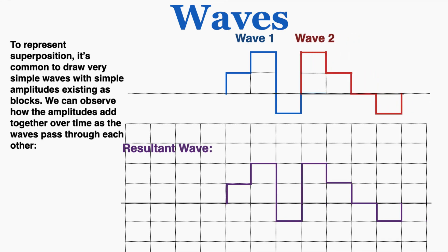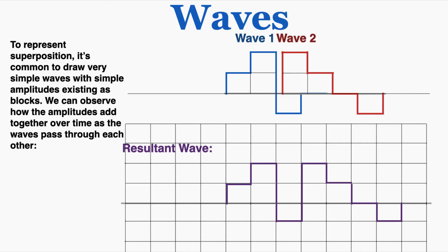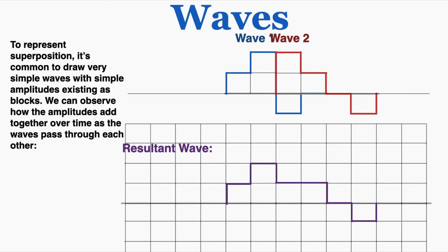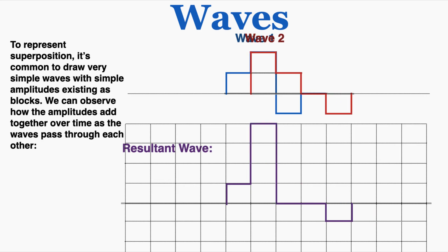As I bring wave 2 closer, I can see that at the point where the amplitude of wave 2 is 2, wave 1 has an amplitude of negative 1, so that's canceling out to produce an amplitude of 1. The resultant wave shows that in that one specific position the amplitude is 1 instead of 2 or negative 1. As the wave continues to move through, the positions with amplitude 2 are adding together so the total amplitude is 4. To the right of that, the red wave has amplitude 1 and the blue wave has amplitude negative 1, canceling out to produce an amplitude of 0.